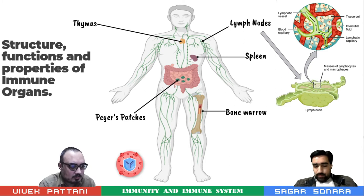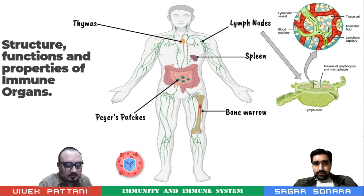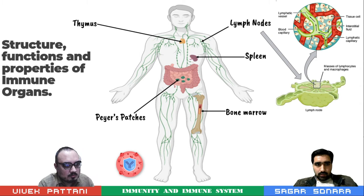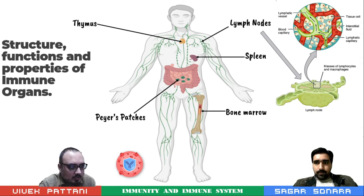I am going to continue with the structure, functions and properties of the immune organs, covering only the basics. Basically lymphoid organs — in this diagram you can see the immune system or lymphatic system of our human body, clearly indicating the thymus, Peyer's patches, lymph nodes, spleen and bone marrow.